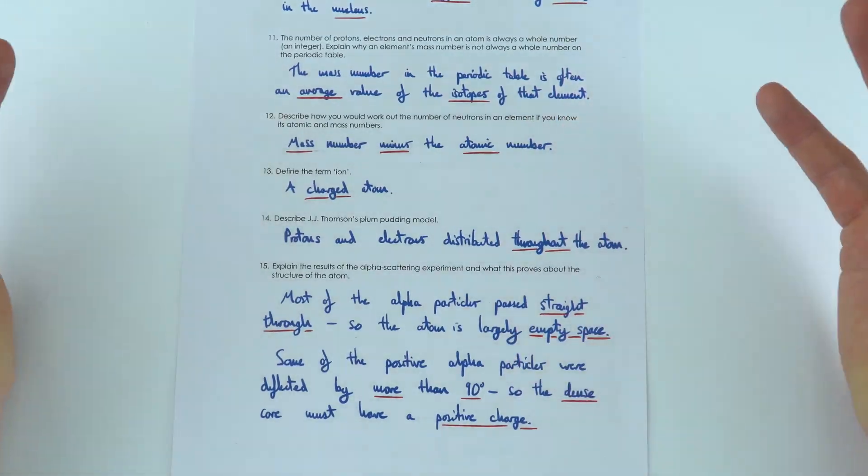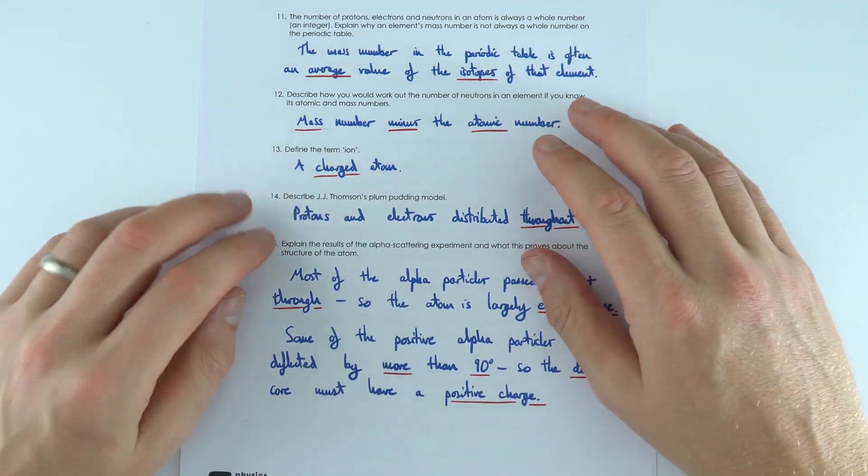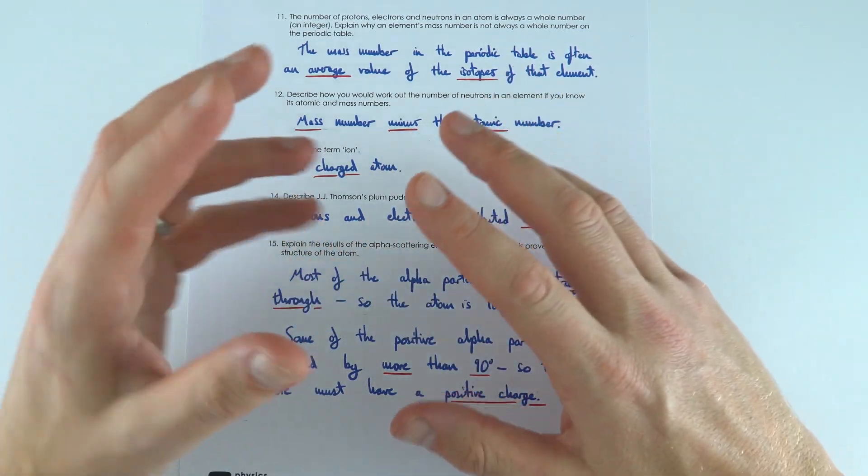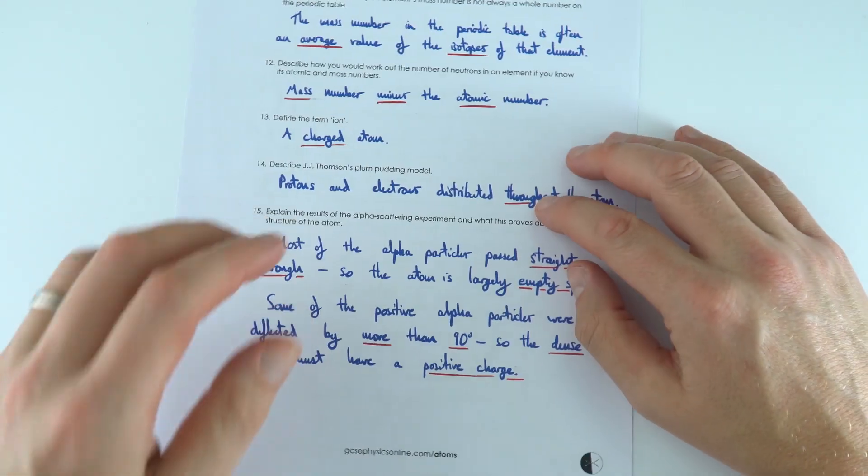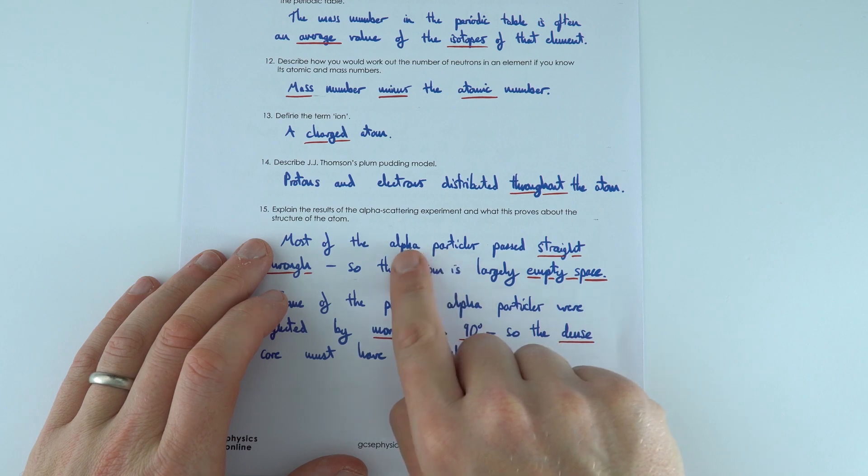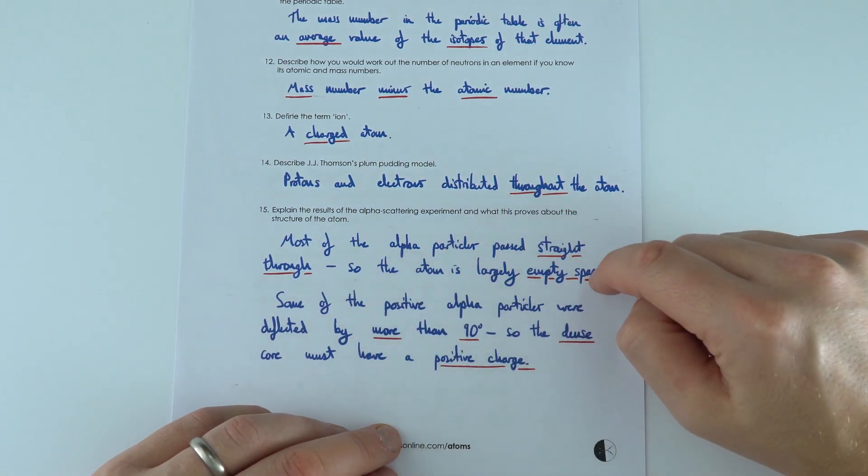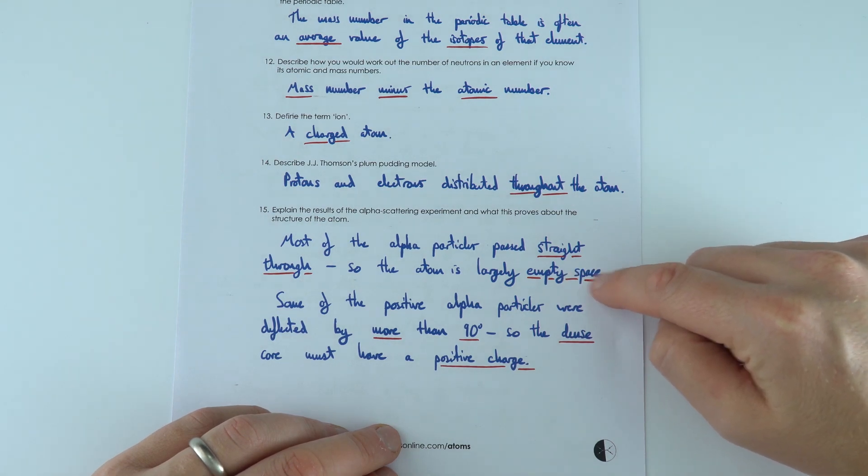Finally, what's the model that we've developed over time? Initially they thought that protons and electrons were all distributed evenly throughout the atom. Then as science developed, we found that if we fired alpha particles at a thin sheet of gold leaf, most of them would go straight through, which means that the atom must be largely empty space.